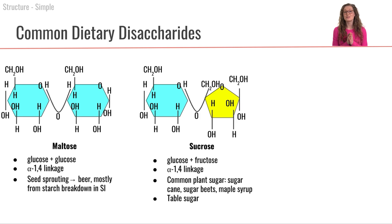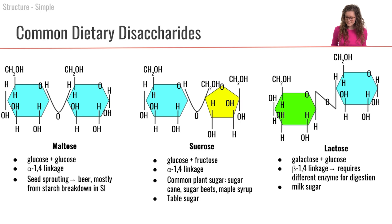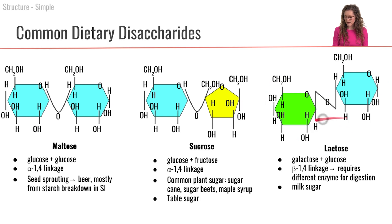Now let's take a look at the next one — sucrose. Sucrose is a disaccharide with glucose and fructose, and also has an alpha-1,4 linkage between them. Sucrose is a very common plant sugar — it's the type of disaccharide that we would find in sugarcane, in sugar beets, in maple syrup. Additionally, sucrose is what we refer to as table sugar. And then the third disaccharide is lactose. Lactose is a disaccharide formed by galactose and glucose, and they have a different type of bond — a beta-1,4 linkage. This is important because this beta-1,4 linkage requires a different kind of enzyme in order to break these monosaccharides apart. Lactose is the type of sugar that we find in milk — so milk sugar.